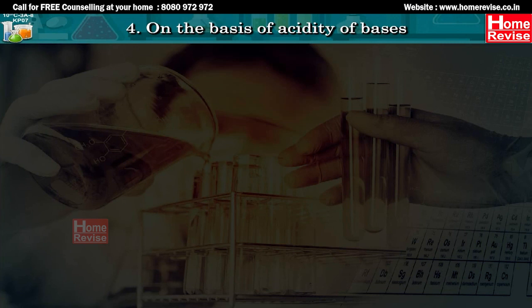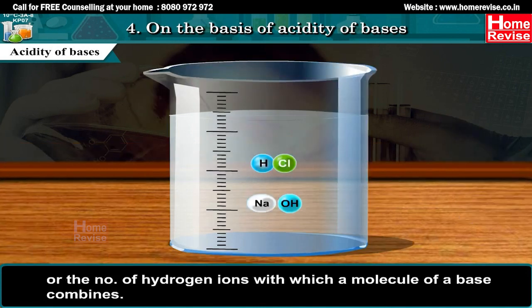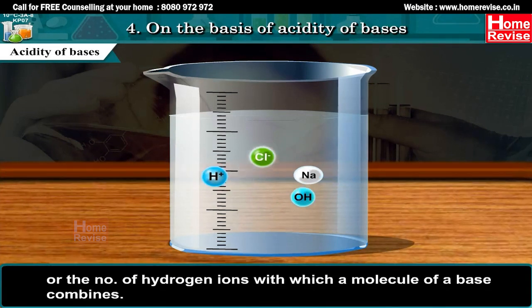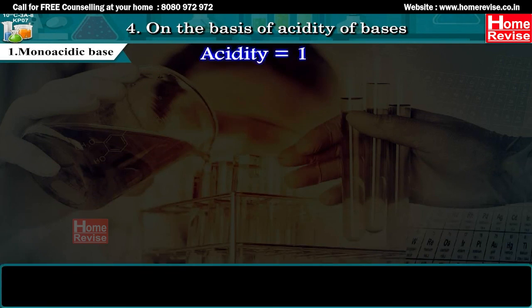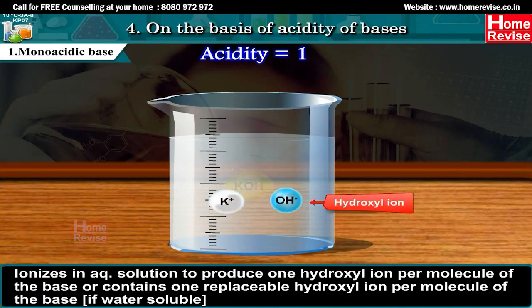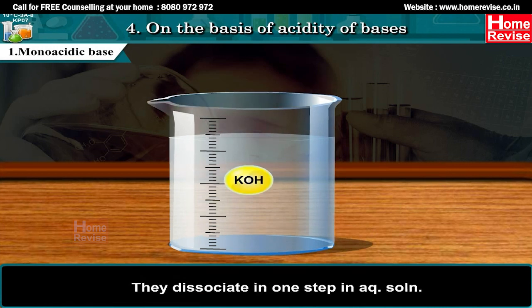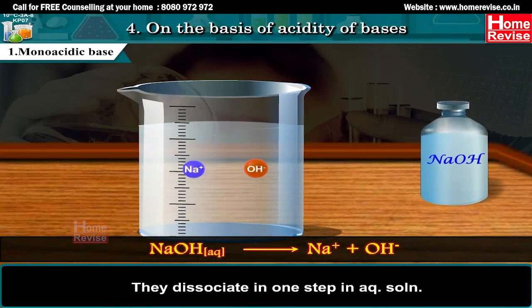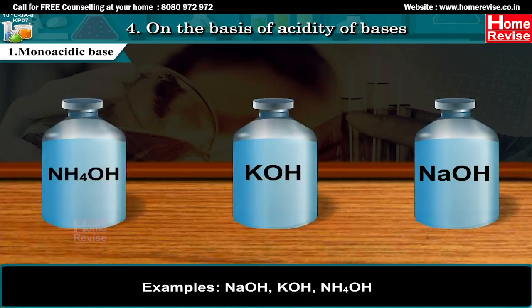4. On the basis of acidity of bases. Acidity of a base is the number of hydroxyl ions OH- which can be produced per molecule of the base in aqueous solution, or the number of hydrogen ions with which a molecule of a base combines. 1. Monoacidic base (acidity = 1): ionizes to produce one OH- per molecule. Dissociates in one step. NaOH(aq) reversibly gives Na+ plus OH-. Examples: NaOH, KOH, NH4OH.